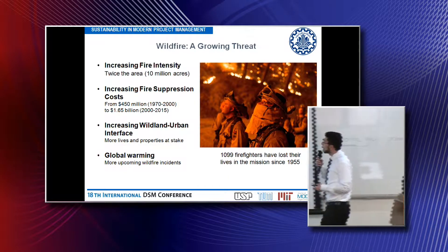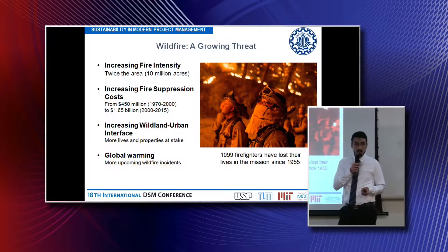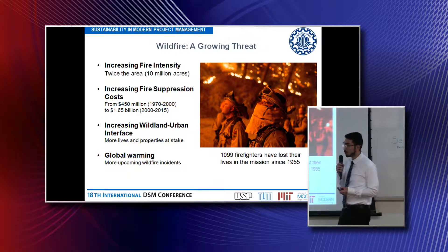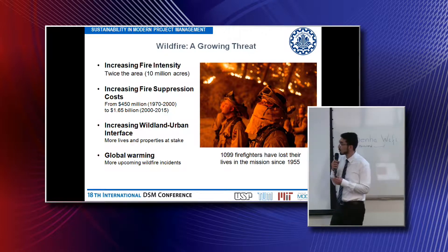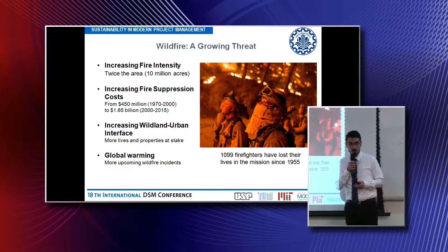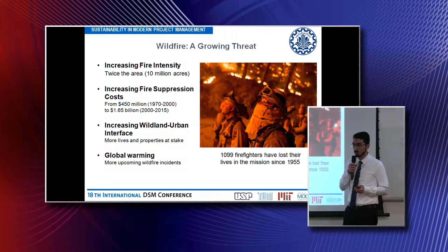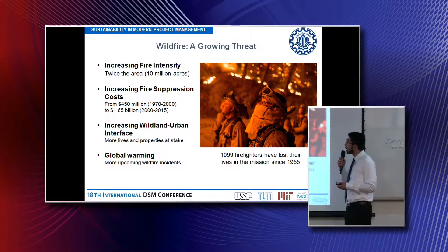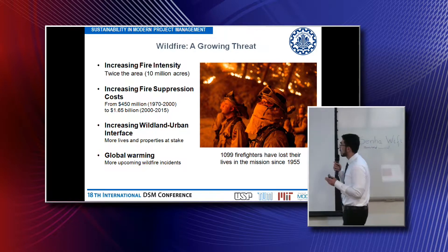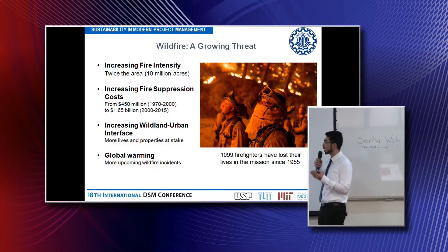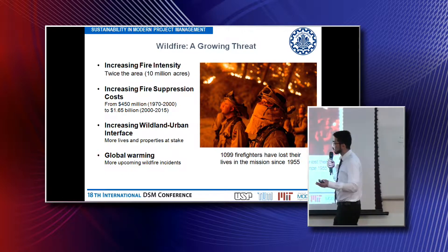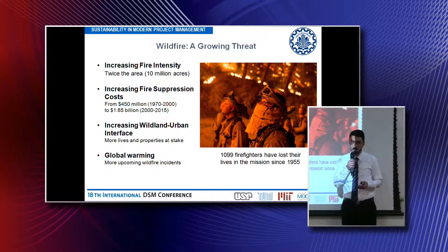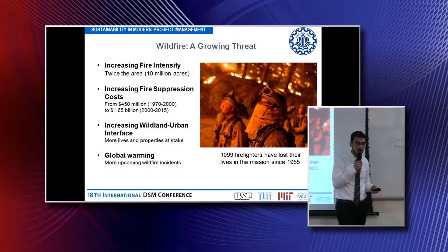In comparison to the 1970s, wildfires now burn twice the area of United States forests — up to 10 million acres, which is around 40,000 square kilometers. The costs of fire suppression have skyrocketed from 450 million dollars before 2000 to 1.6 to 5 billion dollars afterwards.